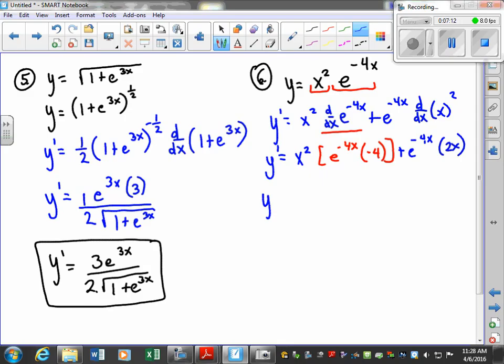So let's just go through and simplify this a bit. I'm going to bring my negative 4 out front. Negative 4x squared e to the negative 4x. Plus, bring my 2x out front, 2x e to the negative 4x.